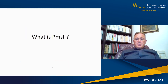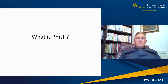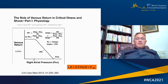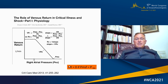The first question the clinician should ask is: what is the mean systemic filling pressure? The answer from the Guyton curve is that the mean systemic filling pressure is the pressure that equals the right atrial pressure at which the flow of venous return stops. So if the mean systemic filling pressure is equal to the right atrial pressure, venous return is zero.